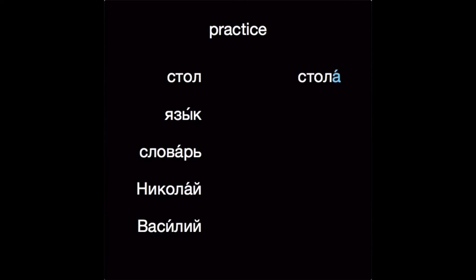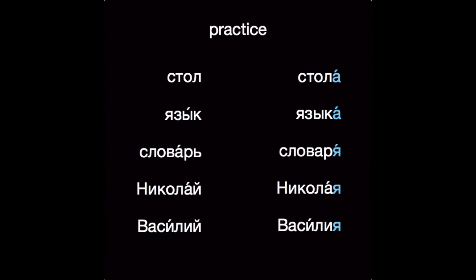Let's look at some examples. See if you can give the genitive form before it appears on the screen and say why it's spelled the way it is. Стол → стола, язык → языка — those two are the basic spelling of the ending. Словарь → словаря. Николай → Николая. Василий → Василия. And see how we're dropping that final soft sign and И краткая before we add the ending.